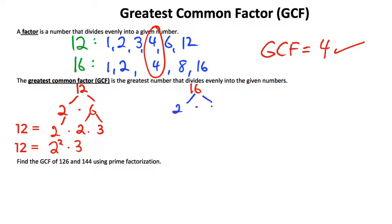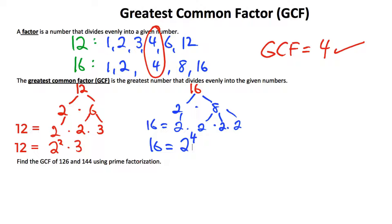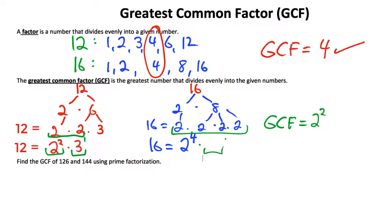For 16, we have 2 times 8, and then 8 can be broken down further, all the way down. So 16 equals 2 multiplied by itself 4 times — that's 4 factors of 2, which we write as 2 to the 4th. Using this prime factorization, we find the GCF by looking at what's common. We have 2 factors of 2 in 12 and 4 factors of 2 in 16, so the most that's common is 2 factors of 2. For 3: there's 1 factor of 3 in 12 and none in 16 — that's 3 to the 0, so 0 factors of 3 are common. Working that out: 4 times 1 gives a GCF of 4.